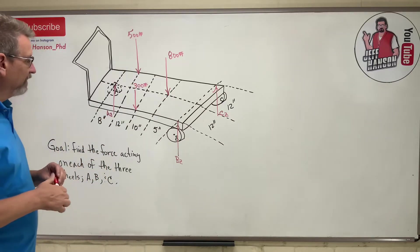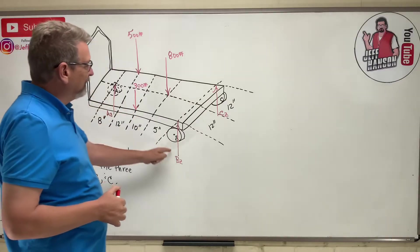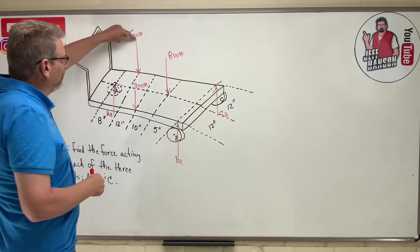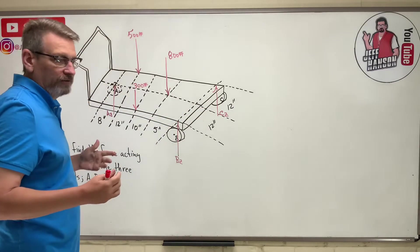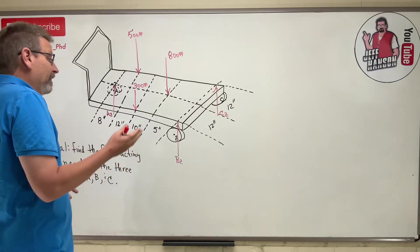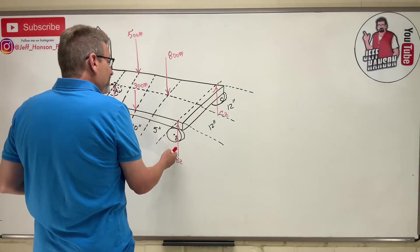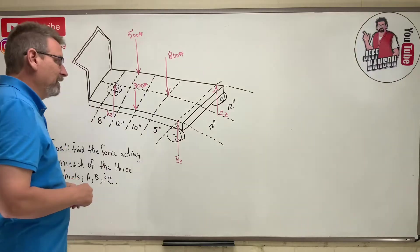So I've got three reactions - A, B, and C - and then I have these three loads on this cart, and I am asked to find what are the reactions at A, B, and C.